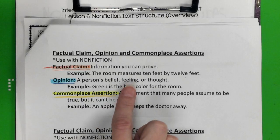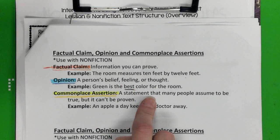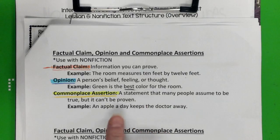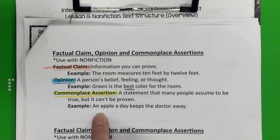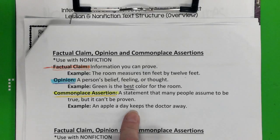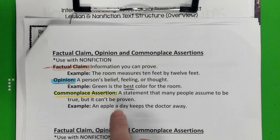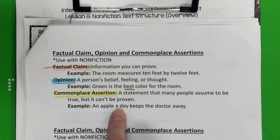Commonplace assertion kind of takes the two together. It's a statement that many people assume to be true, but it can't be proven. The example here is 'an apple a day keeps the doctor away.' Someone out there ate an apple every day, then got sick and had to go to the doctor — hence why this is not always true. It's something people say all the time and think it's true, but it's not.